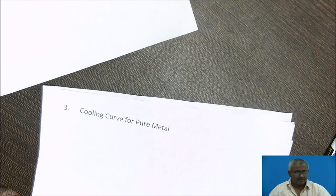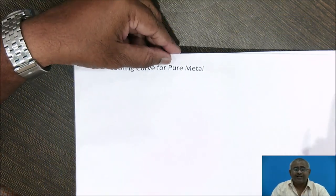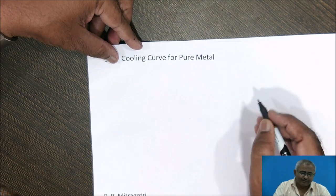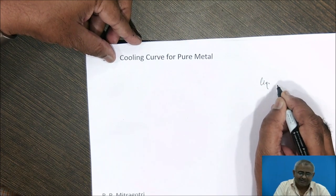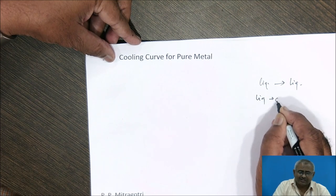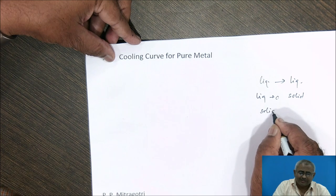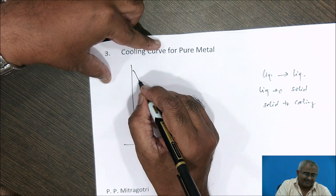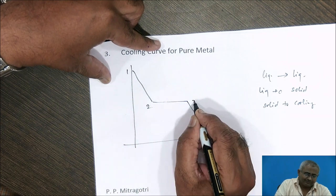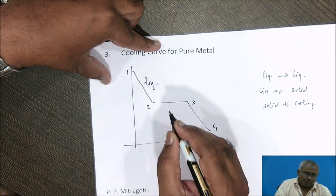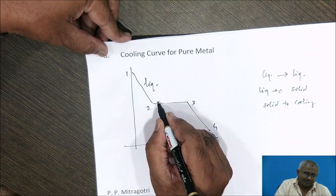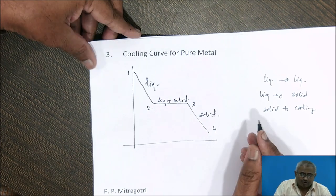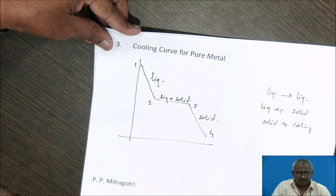We will begin our discussion with the cooling curve for pure metal. The cooling curve from liquid to solid state will have three stages of cooling. The first stage will be liquid cooling, the second stage will be liquid to solid transformation, and the third stage will be solid to solid cooling. The cooling curve for a pure metal will appear with points one, two, three, and four. One to two represents liquid to liquid transformation, two to three represents liquid to solid transformation, and three to four represents the solid cooling from higher temperature to room temperature.